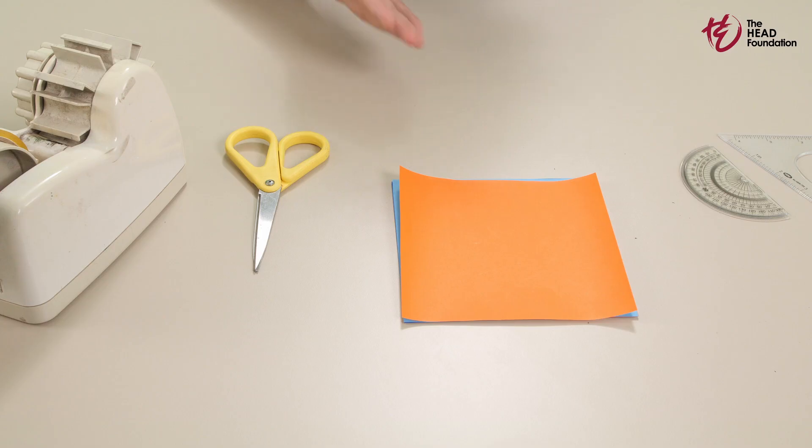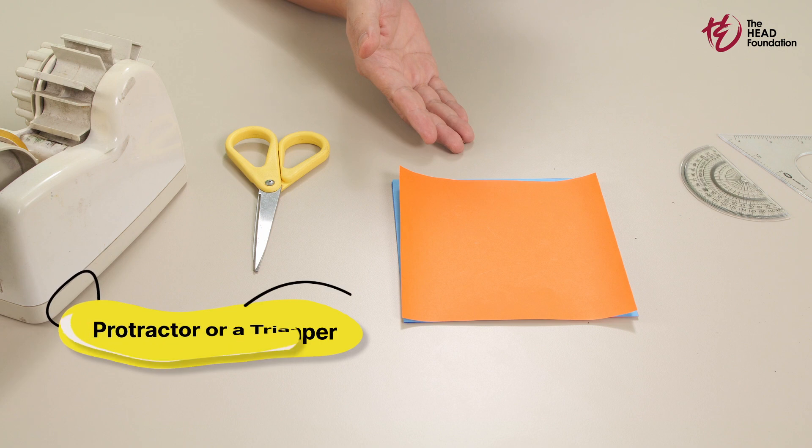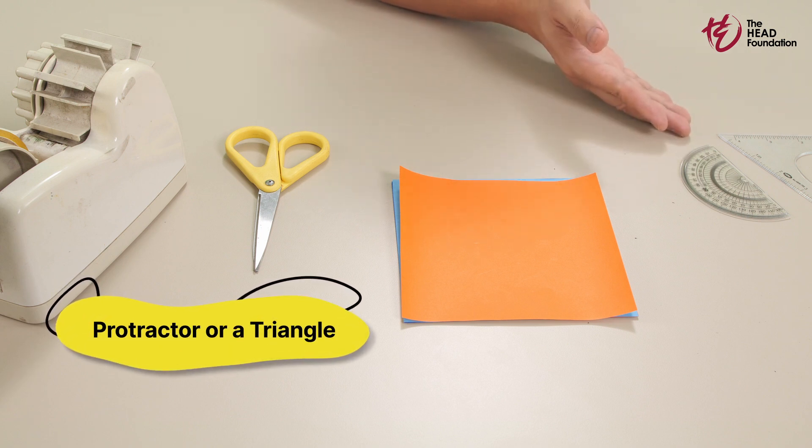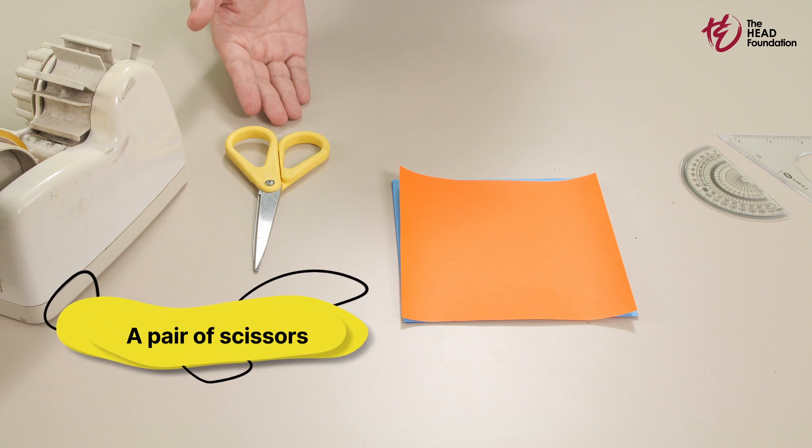To conduct this lesson in your classroom, you will need sheets of origami paper, enough for all students, a protractor or a triangle to verify our measurements, a pair of scissors, some tape, a pencil or a pen, and a board to show and explain solutions.